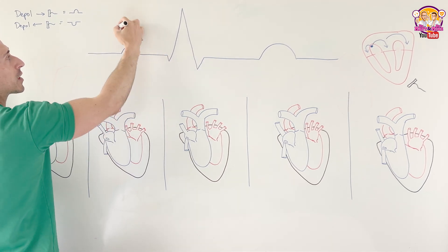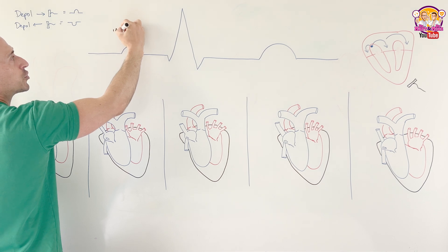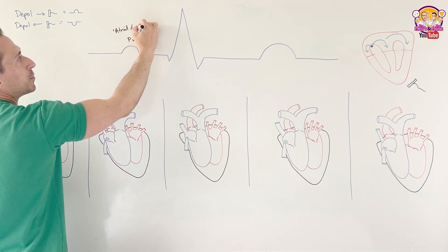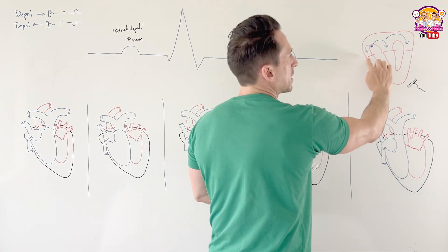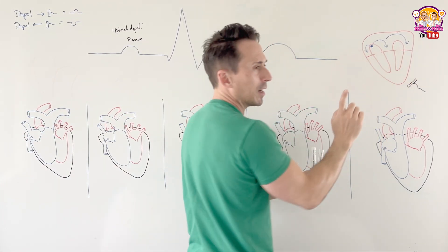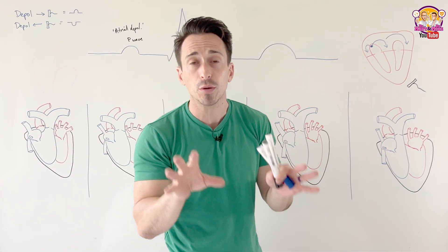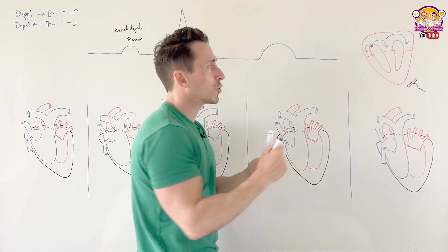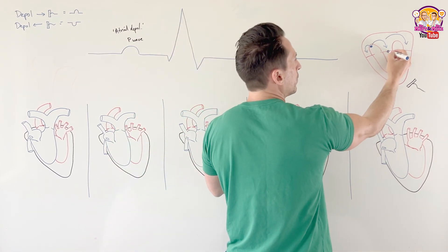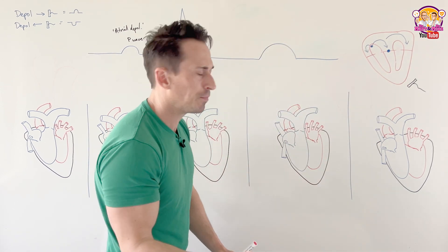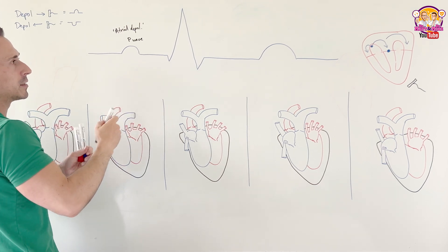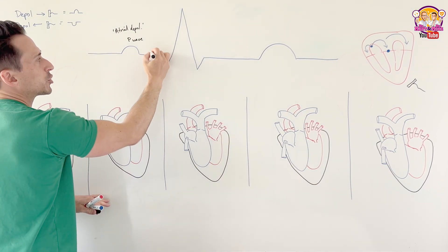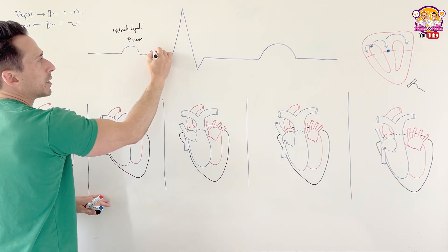The P wave represents atrial depolarization. Then there's fibrous tissue that the electrical signal cannot move past. The signal funnels through another node called the AV node, and that takes a little bit of time — so what we end up getting is a flat line on the ECG, representing conduction going through the AV node.